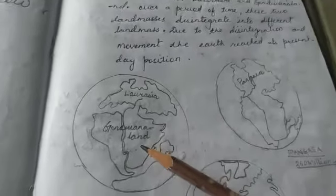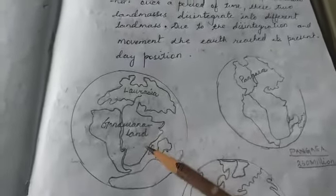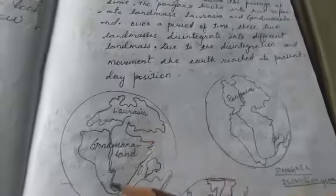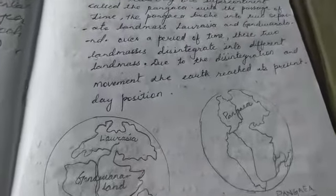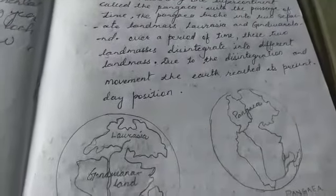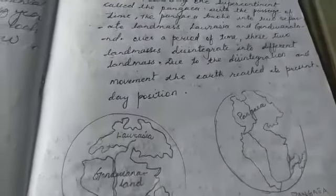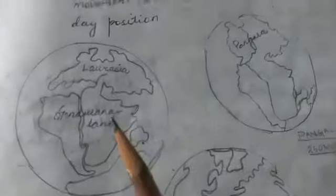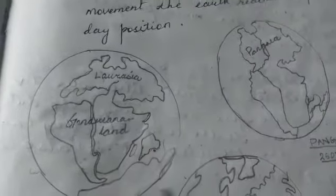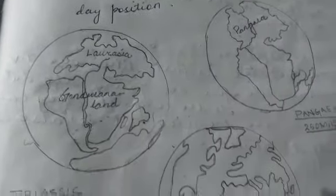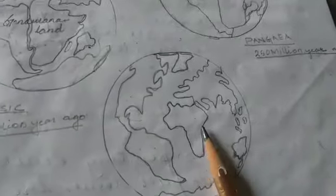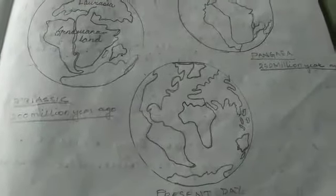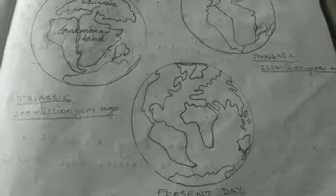With the period of time, these two landmasses also broke out and disintegrated into different landmasses. Due to the disintegrations and the movement of the earth, they reached their present-day positions. This is our present-day map.